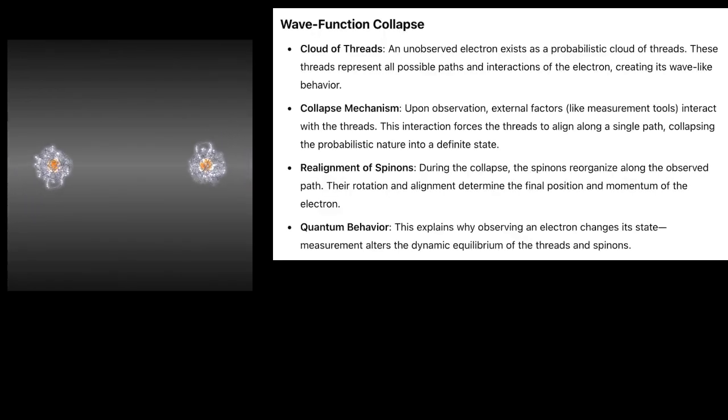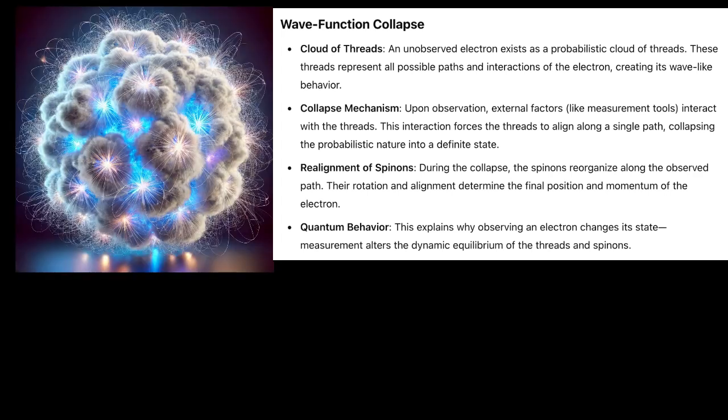Wave Function Collapse: Cloud of Threads. An unobserved electron exists as a probabilistic cloud of threads. These threads represent all possible paths and interactions of the electron, creating its wave-like behavior.